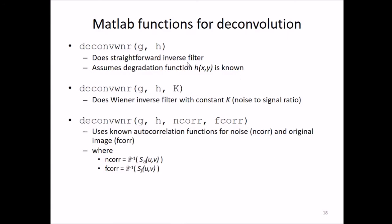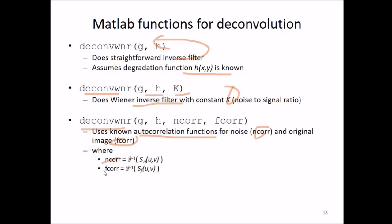These are the MATLAB functions available for deconvolution: deconvwnr for Wiener filtering does a straightforward inverse filter assuming the degradation function H is known; deconvwnr with constant k does Wiener inverse filtering with a constant noise-to-signal ratio k; and the version with n_cor and f_cor uses known autocorrelation functions for noise and the original image, where n_cor and f_cor are given by the Fourier inverse of the respective power spectra.